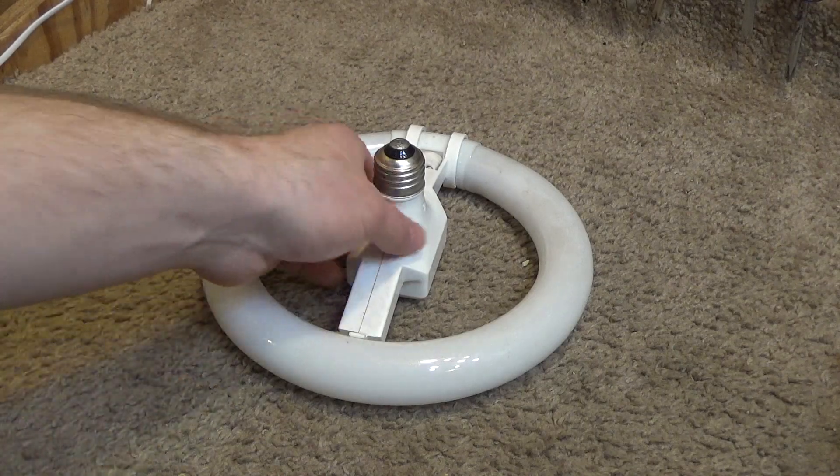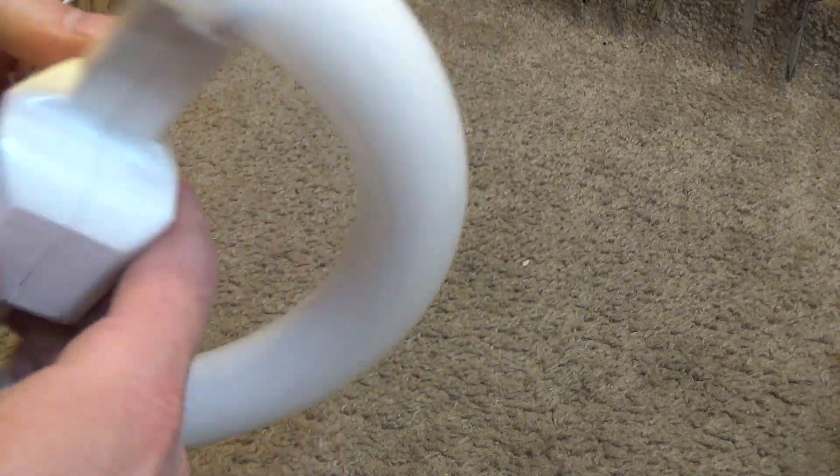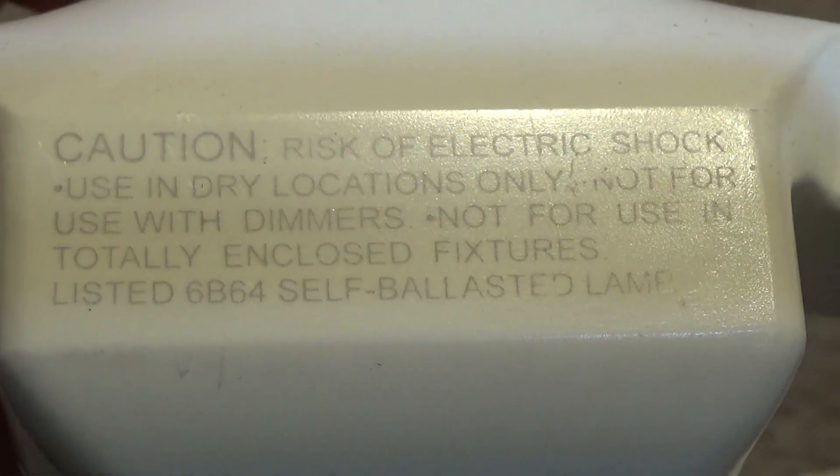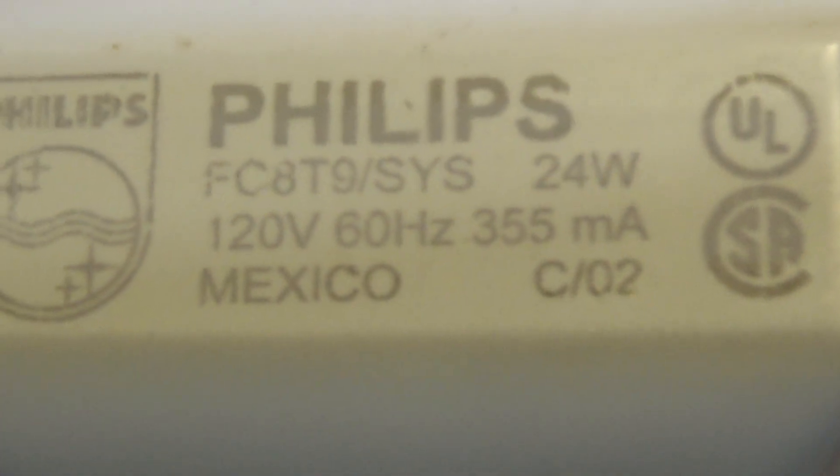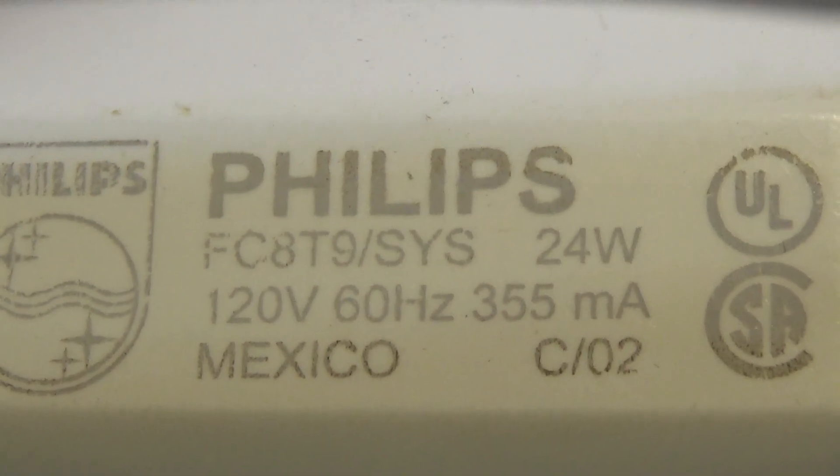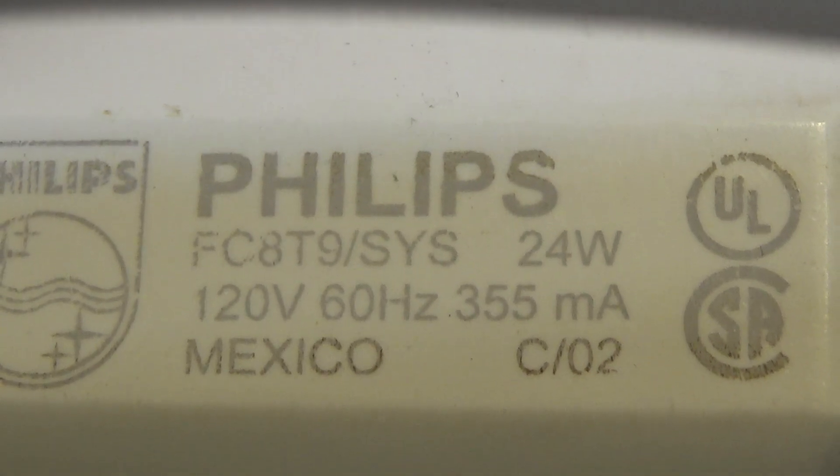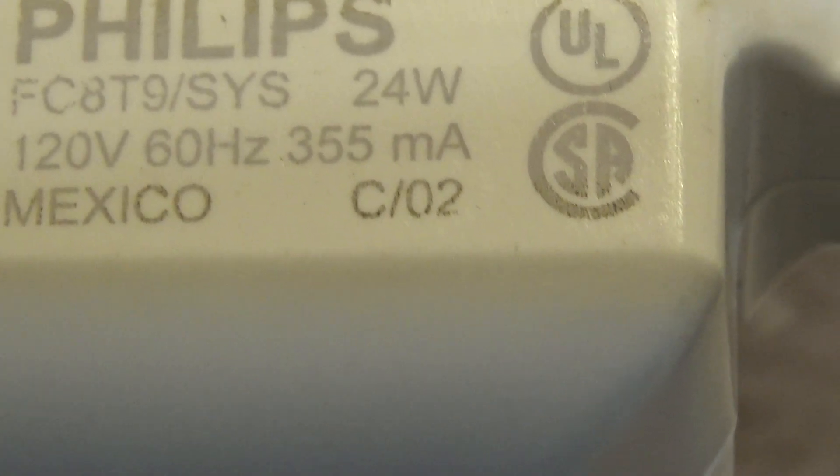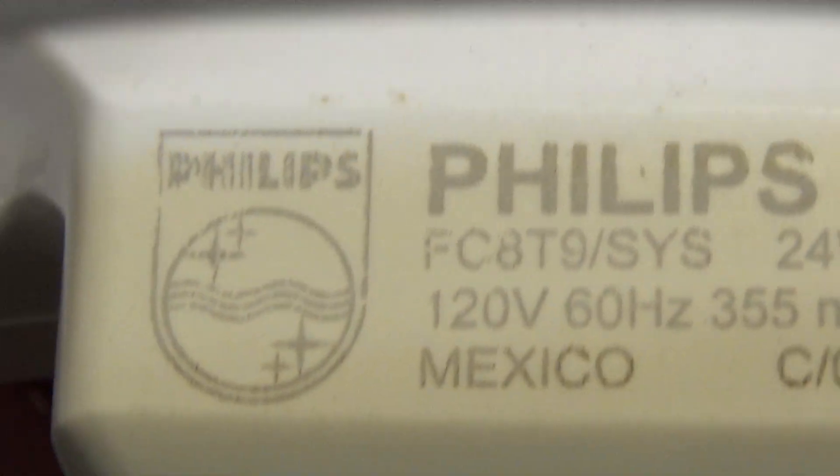Hello viewers, here is a Philips self-ballasted lamp. The model number is the FC8T9-SYS. It's 24 watts, perhaps from 2002, made in Mexico.